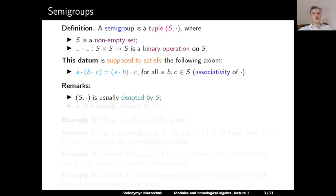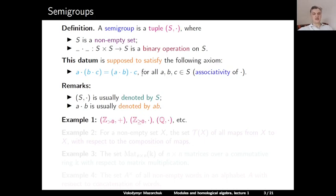Some remarks: the pair (S, ·) is usually denoted just by S, and the product A·B is usually denoted simply by AB. Here are some examples. The numerical semigroups: the semigroup of all positive integers with respect to addition — addition is clearly associative. The semigroup of all non-negative integers with respect to multiplication — multiplication is also associative. The semigroup of all irrational numbers with respect to multiplication, or with respect to addition, and so on.